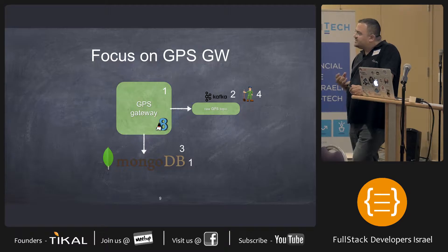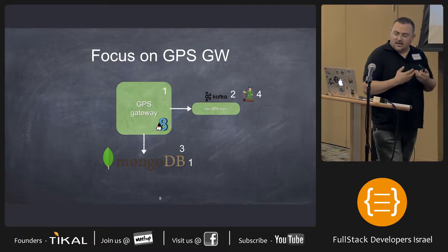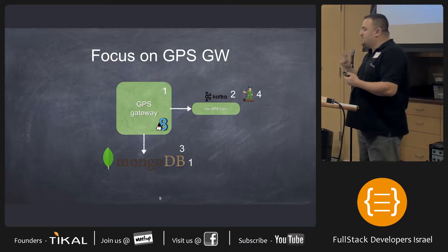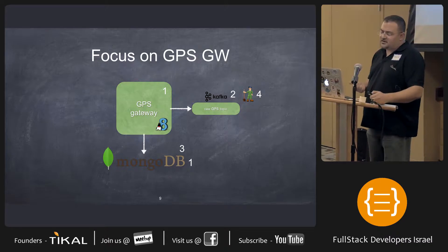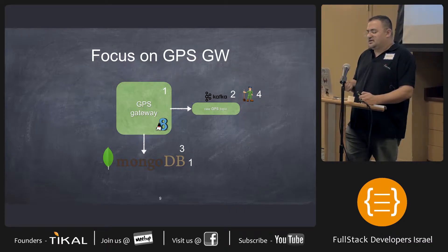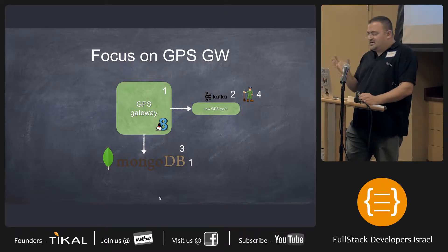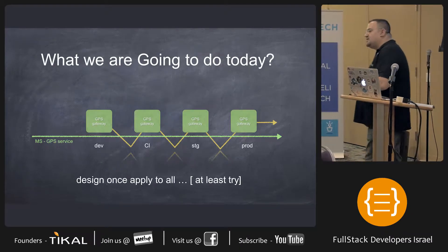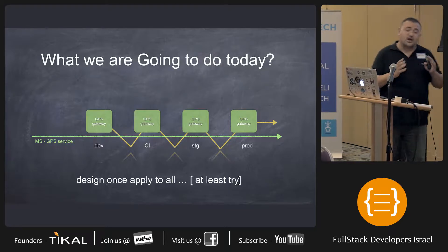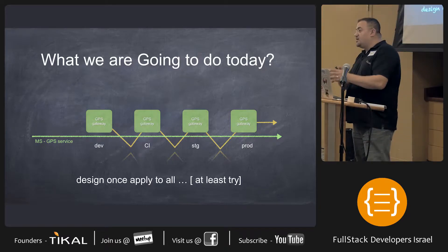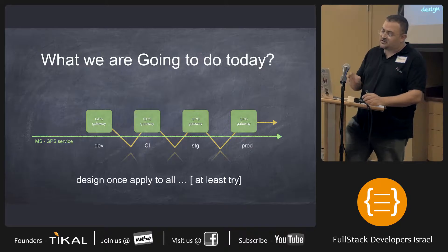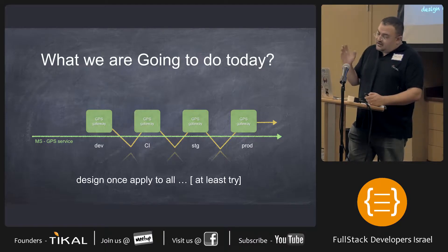If I focus only on one service and want to see how I actually build it: I have this microservice called the GPS service, the Kafka queue topic I need to manage, a database I need to manage, and Kafka also comes with Zookeeper alongside it. What I'm going to try and do is take this single microservice and put it through a development environment, a continuous integration environment, a staging or production — and how do I do that?